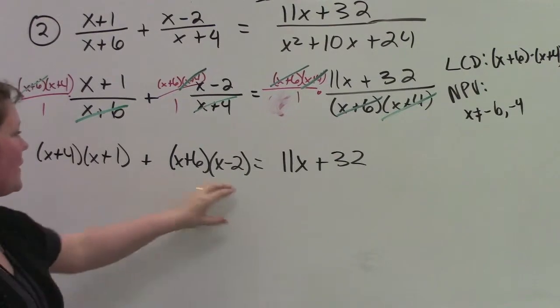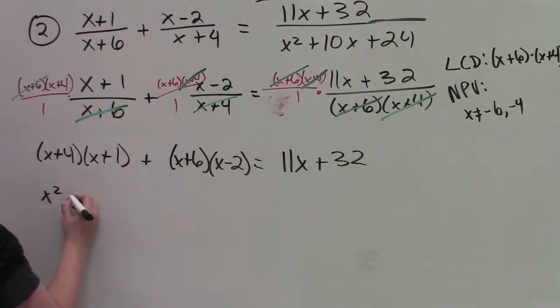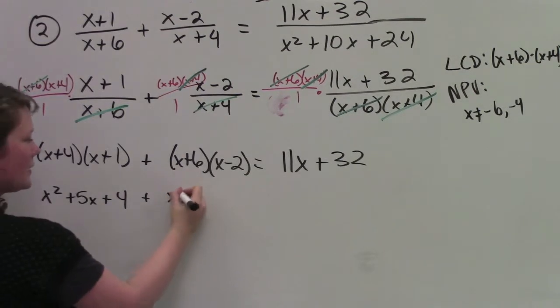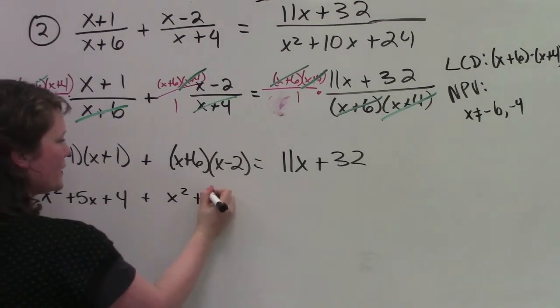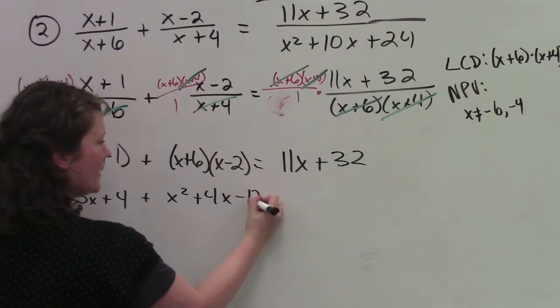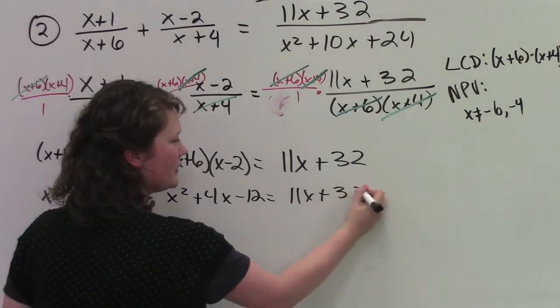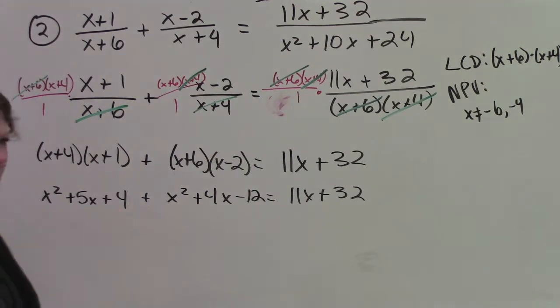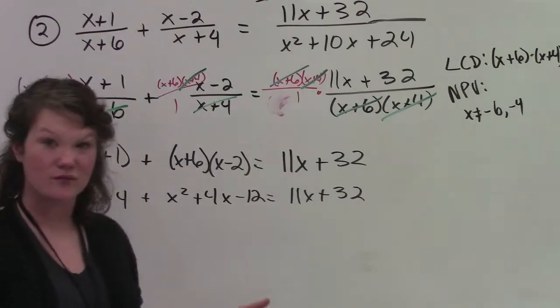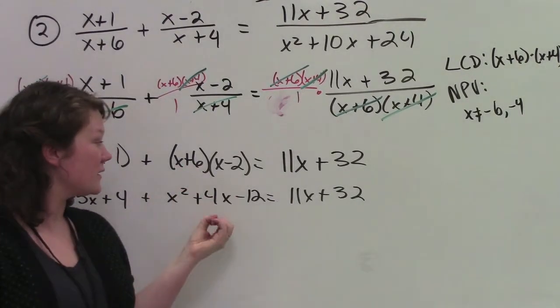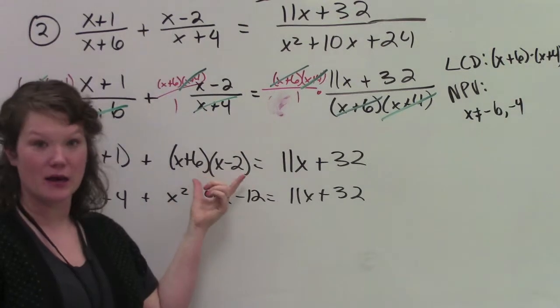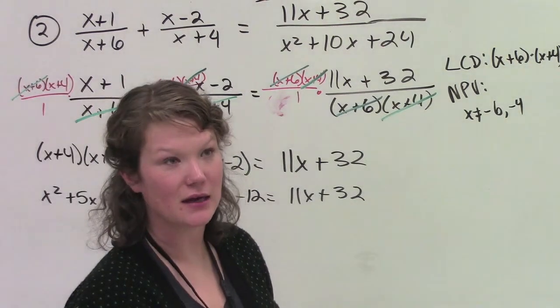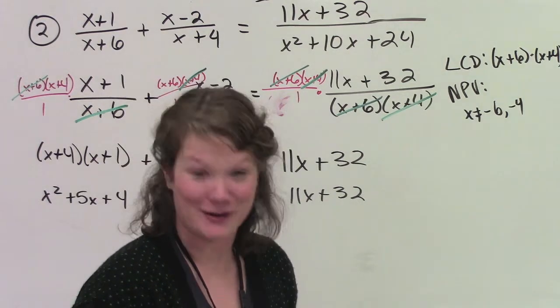Now what we're going to do is expand these out. x squared plus 5x plus 4 plus x squared plus 4x minus 12 equals 11x plus 32. I simplified these pretty quickly. Some people are going to foil them out. But at this point in the game, if you don't have the skill of being able to expand one of these really fast, please come and talk to me because it's going to help on the exam, not to mention in grade 12.